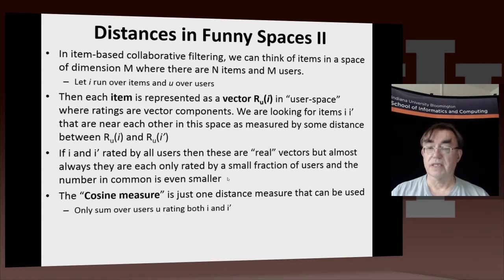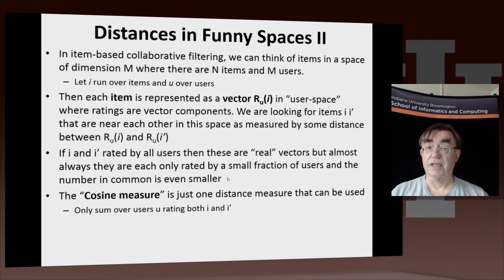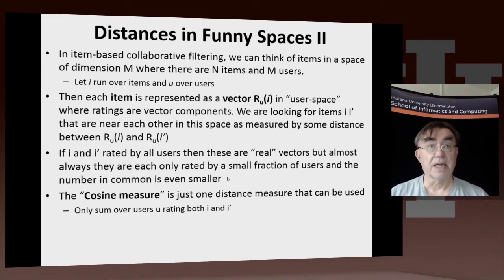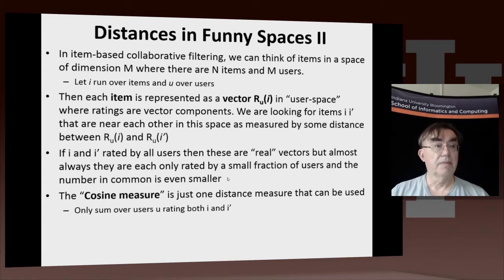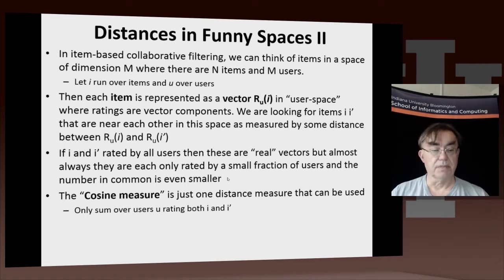Again, this is very sparse — a given item is only going to be rated by a few of the users, although some items are rated by many users. This is a feature of the long tail: the items which are not ranked by many people are possibly the most important, because the common ones are pretty easy to deal with. Here the cosine measure is a distance measure that can be used, and it only sums over users that rate both of two items.